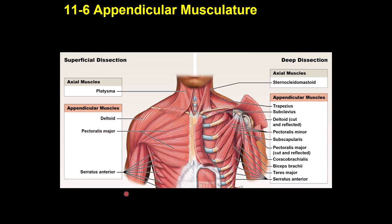The appendicular muscular system begins here. Superficial muscles visible include the deltoid and, deeper, additional muscles. The deltoid muscle is responsible for flexion, abduction, and extension of the shoulder joint. Pectoralis major causes flexion, internal rotation, and adduction of the shoulder joint.